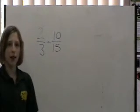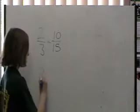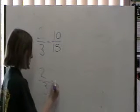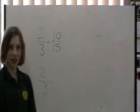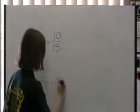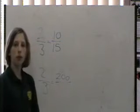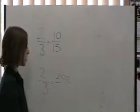This time, how about we do 2 times 100. So 2 times 100 is 200, and 3 times 100 is 300.